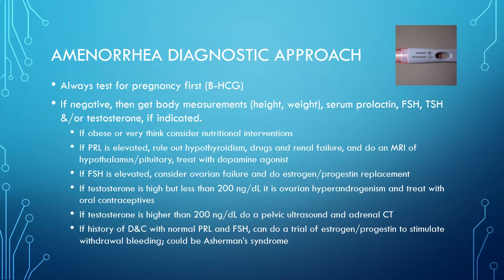The diagnostic approach to amenorrhea always begins with a pregnancy test, as that is the most obvious cause. If not pregnant, obtain body measurements, serum prolactin, FSH, TSH, and testosterone levels if indicated. If the patient is obese or very thin, consider nutritional interventions. If prolactin is elevated, rule out hypothyroidism, drugs, and renal failure, and perform an MRI of the hypothalamus and pituitary; treat with a dopamine agonist or investigate for a prolactinoma.